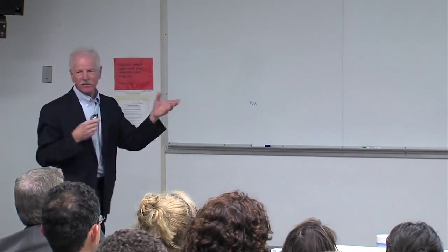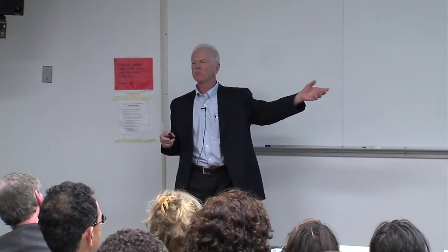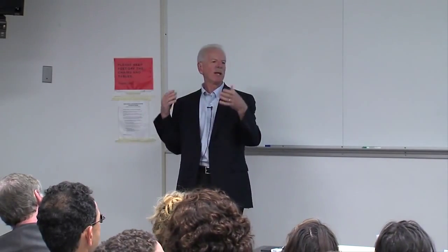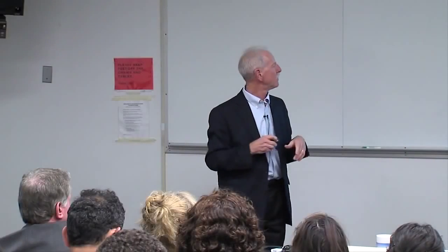There's a really important observation in Schwatka's diary. They set out with two Inuit families loaded on sleds with only one month's food supply. They set off on a 3,000-mile trek, were gone for 13 months, and when the food ran out they lived off the land. He wrote: 'When first thrown wholly upon the diet of reindeer meat, it seems inappropriate to properly nourish the system and there is apparent weakness and inability to perform exertive journeys.' That's exactly what carbohydrate loading theory says. But then he adds: 'This soon passes away in the course of two or three weeks.' This man defined the concept of keto-adaptation — humans don't make the transition from a high-carb to a very low-carb diet overnight or even in a week.